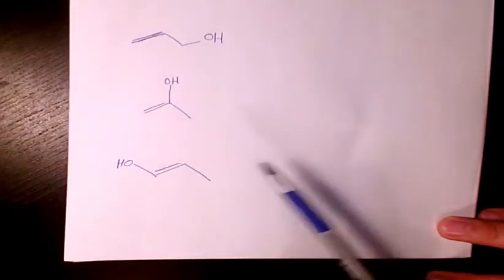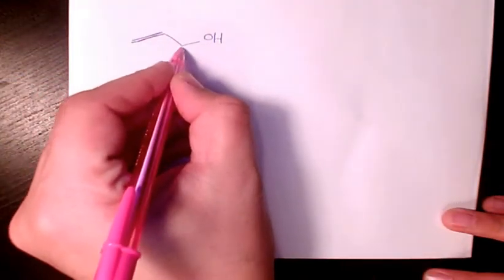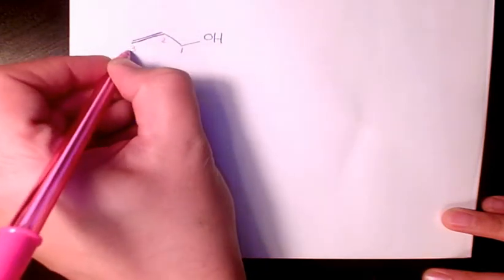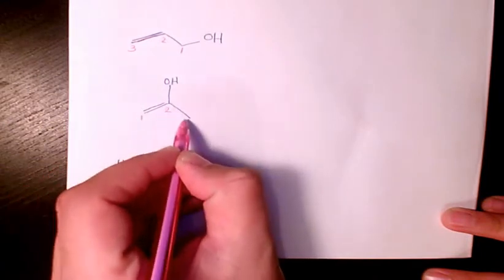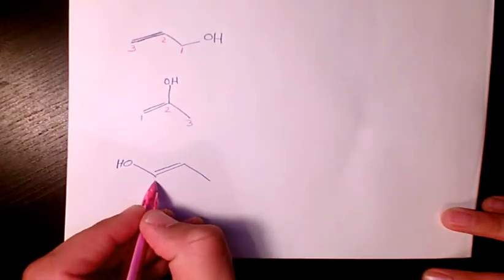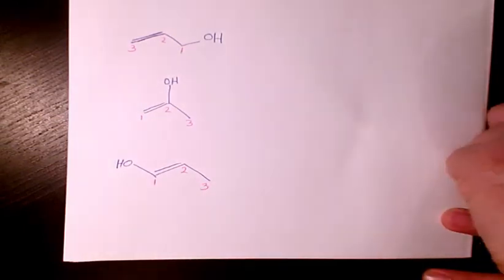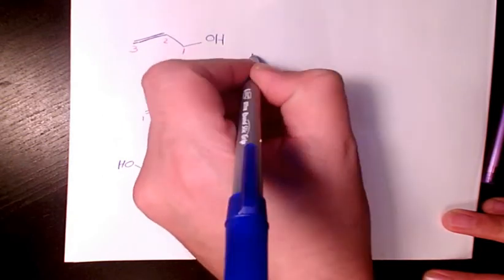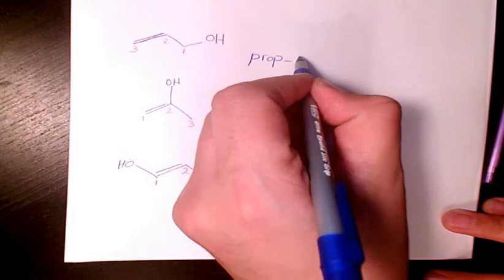One, two, three. One, two, three. If I want to name them, this is going to be carbon one for this molecule, carbon one for this one, and carbon one here. So let's see, the first compound is prop-2-